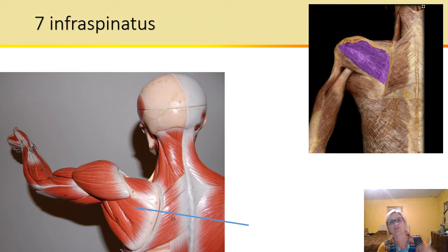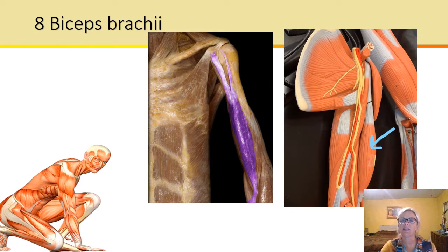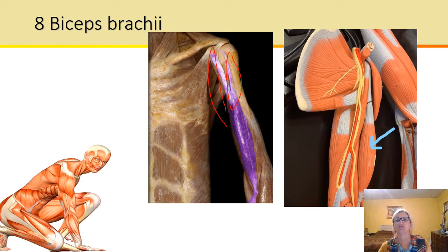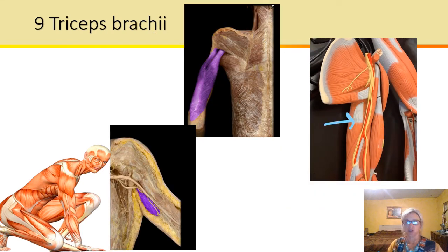All right, next we have the biceps brachii. This is two-headed — that's where we get the bi from — and you can see these two heads up here. This is going to flex the forearm and flex the arm, with the long head, and it also causes supination. Supination is where you are holding your soup bowl — rotating it this way.